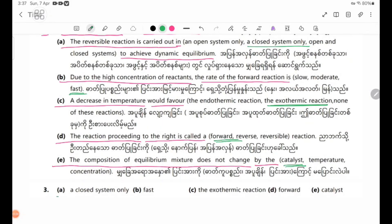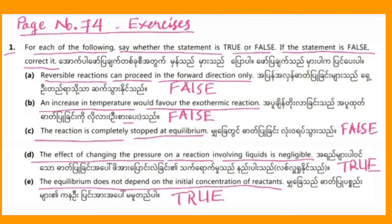A: a closed system only. B: fast. C: the exothermic reaction. D: forward. That's the end of today's lesson. Page number 74, exercise number 1, 2, and 3 have been completed.